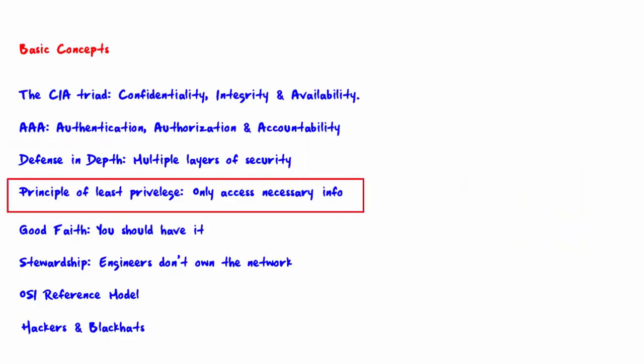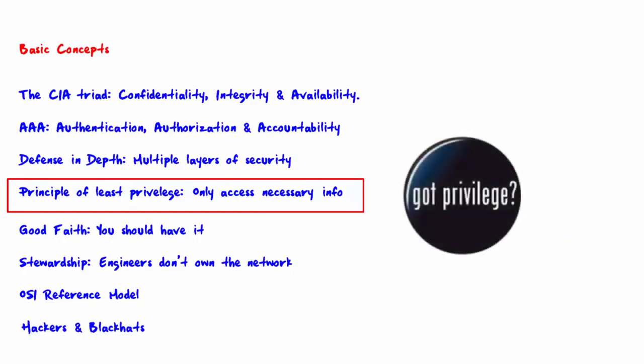The next concept is the principle of least privilege, which means you should only be able to access necessary information. A user must only be able to access information on the network that is necessary to do their job. Likewise, a process must only be able to access the network resources that it needs to perform the legitimate services of that process.